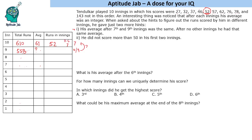His total after 9 innings is 558. Dividing 558 by 9 gives 62, so his average after both the 7th and 9th innings was 62. Then 62 times 7 gives 434, so his total after 7 innings was 434.